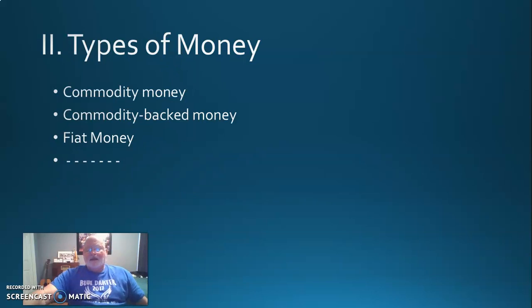Moving on, the types of money. Commodity money: gold, silver, salt. It's money that's worth something, it can be used, it has a value other than apart from its value as money. Commodity-backed money, I only know one example, that's when the dollar bills issued here in the United States were backed in gold or silver.